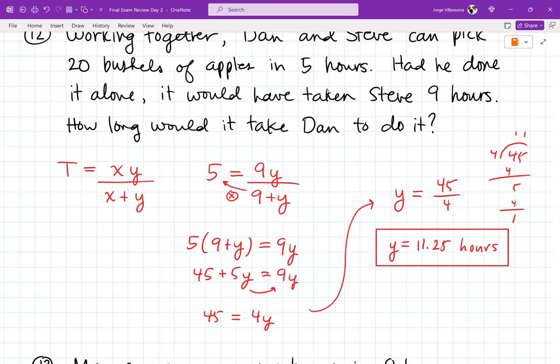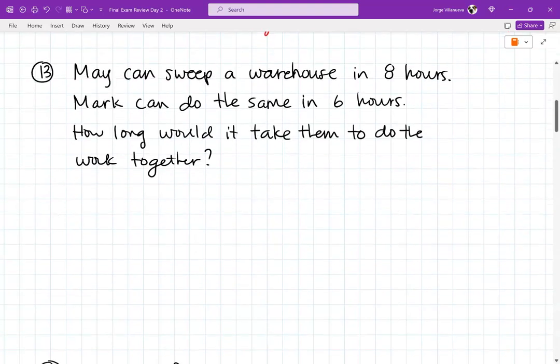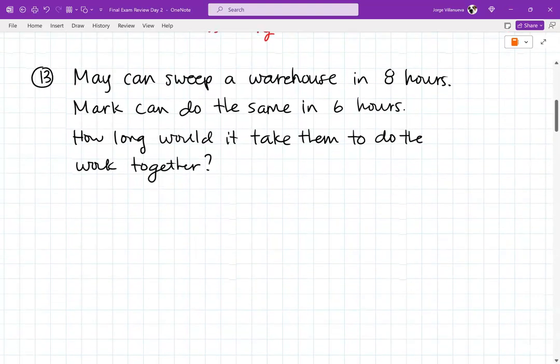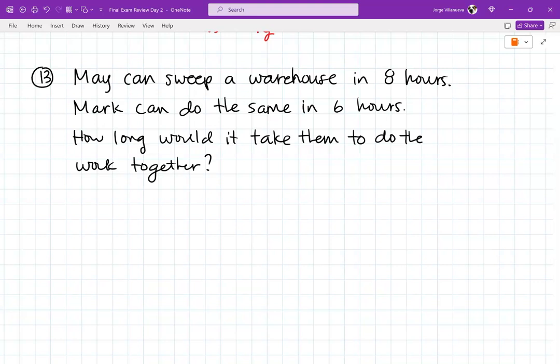So 13 is the same thing, just asking us for a total time. This one they asked us for the time of one person, which is usually harder. Problem 13 asks us for how long it takes them to work together. It says, Mike can sweep a warehouse in eight hours. Mark can do the same in six. How long would it take them to work together? The formula stays the same. T is what I'm looking for. X is 8 and y is 6. So it's going to be (8 times 6)/(8 + 6).